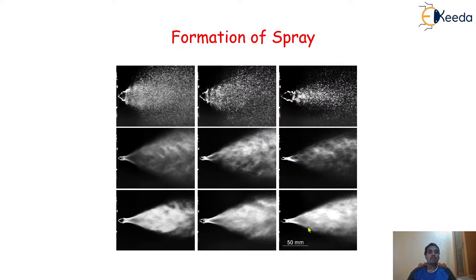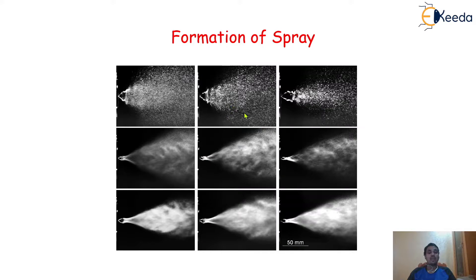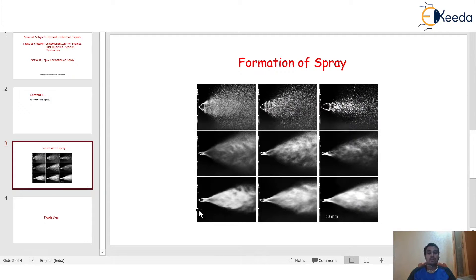In the case of pintox nozzle, it will be different. With the help of this diagram, we can understand how the amount of fuel injected inside the engine cylinder will come out in the form of a spray from the injector nozzle. There is a very important thing to study — how this particular spray will form. There are a few successive phases of the formation of a spray.